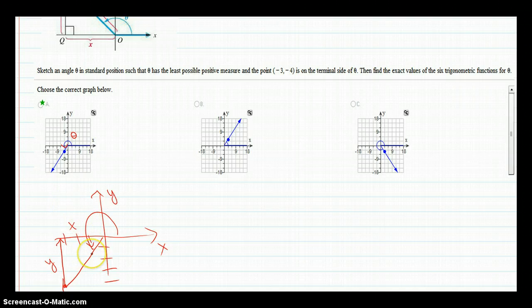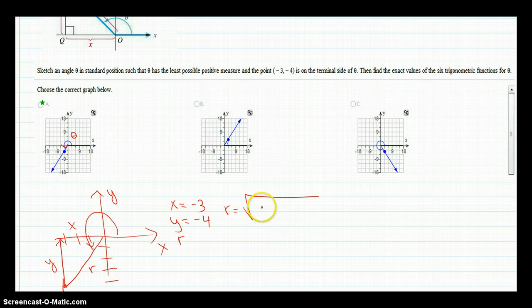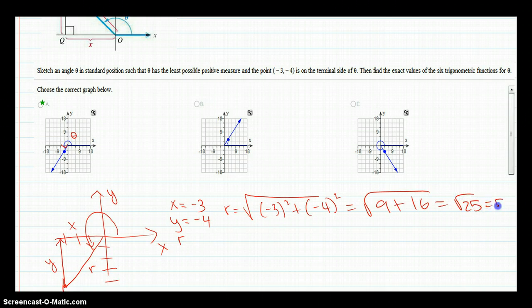X is equal to negative 3. Y is equal to negative 4. And r, by the way, there's my r. If you use the Pythagorean theorem, the r is going to be negative 3 squared plus negative 4 squared, which equals 9 plus 16, which is the square root of 25, or 5. So r is equal to 5.